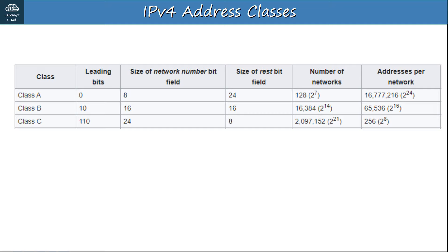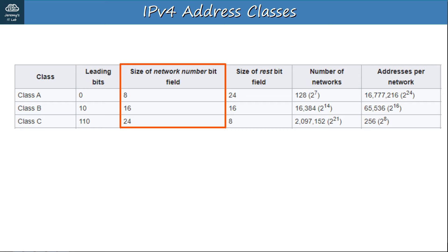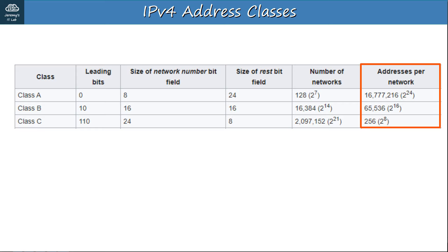We also saw this chart from Wikipedia in the last video. Leading bits of 0 for class A, 1 0 for class B, and 1 1 0 for class C. The network number bit field size, also known as prefix length, is 8 for class A, 16 for class B, and 24 for class C. The size of the rest bit field, also known as the host portion, is 24 bits for class A, 16 for class B, and 8 for class C. The number of addresses per network is calculated as 2 to the power of 8, 16, or 24, that being the length of the host portion.